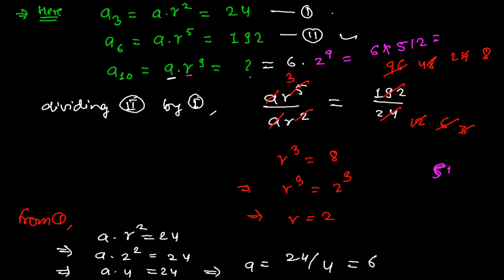And 6 times 512, let me calculate here. 512 times 6. So 6 times 2 is 12, divided by 1, 6 times 1 and 1, 7 and 5 times 6 that will be 30. So 3072 is my tenth term.